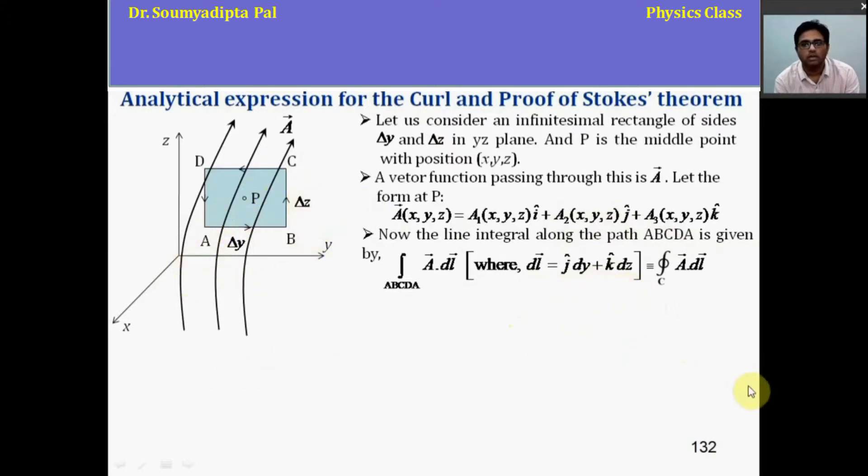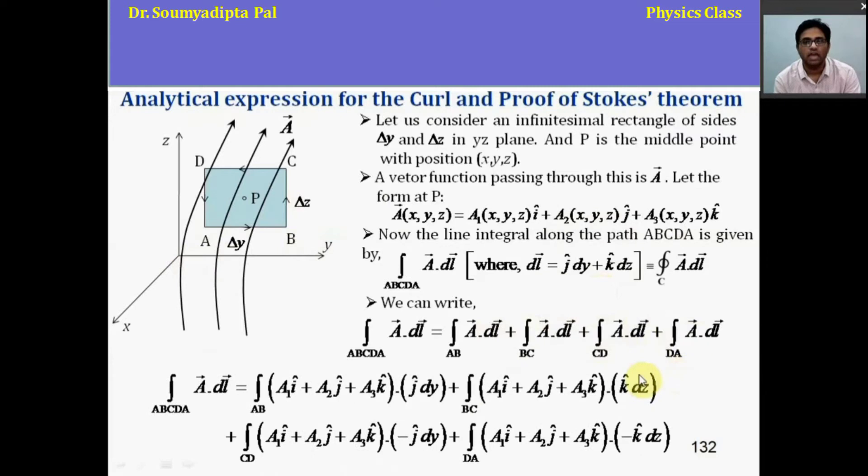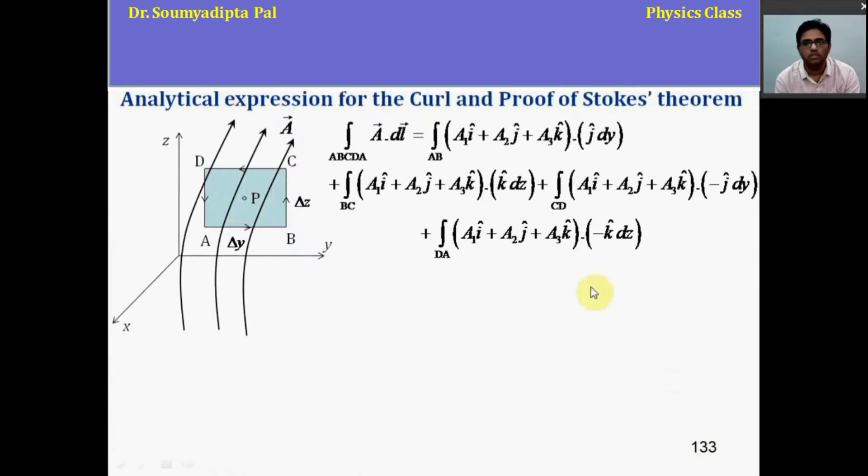Here, DL vector is j dy plus k dz as the rectangle is in yz plane. Now we can decompose the closed line integral into these four line integrals along different paths. Along AB, DL vector is j dy along positive y axis, along BC, k dz along positive z axis, along CD minus j dy opposite to positive y axis and along DA minus k dz along negative z axis.